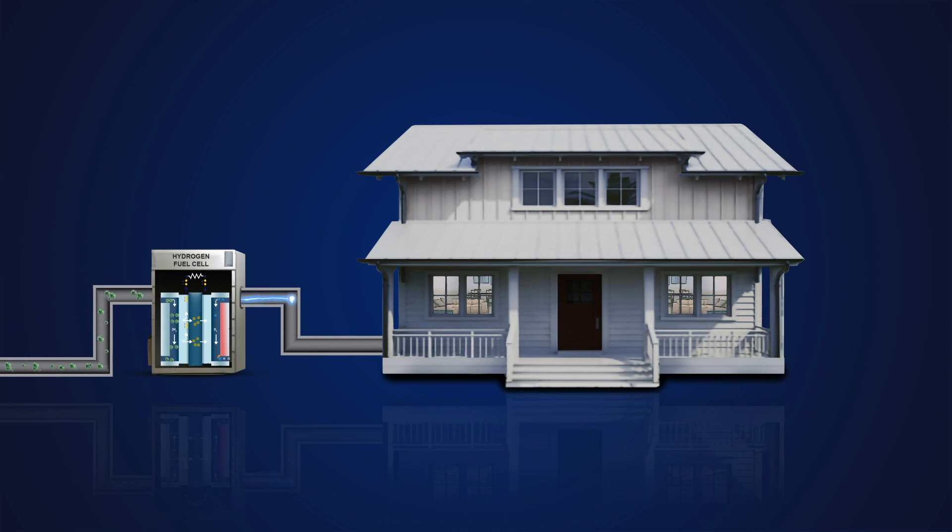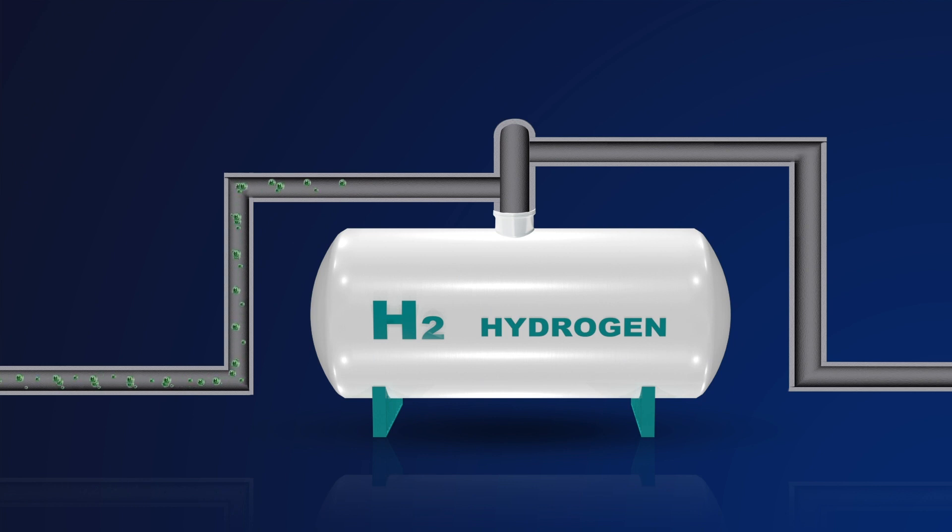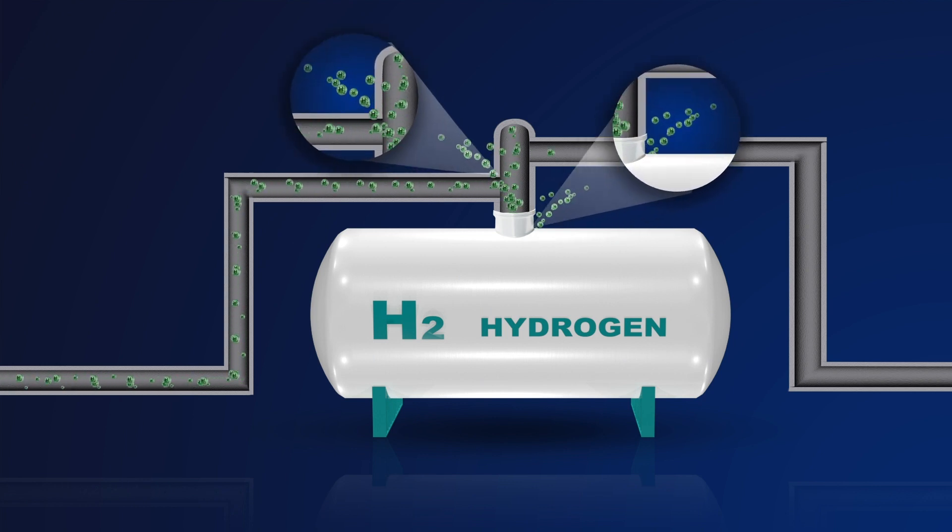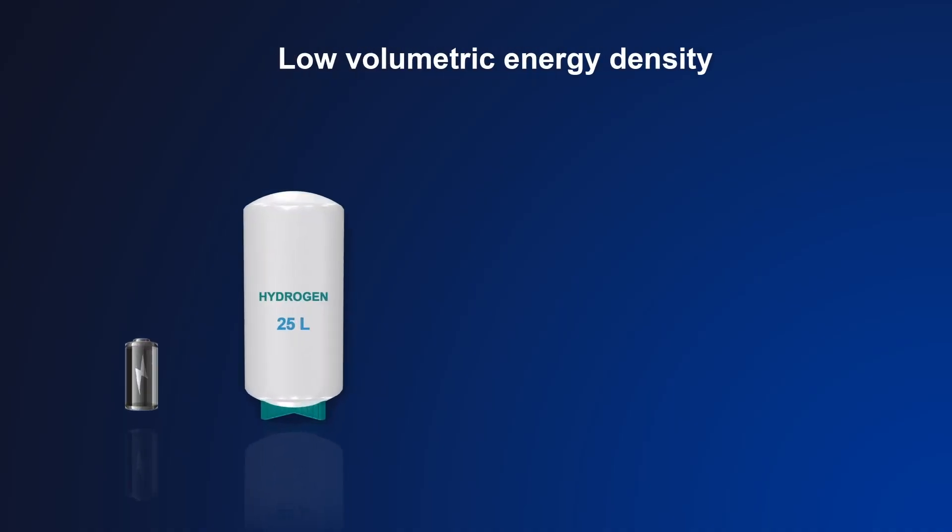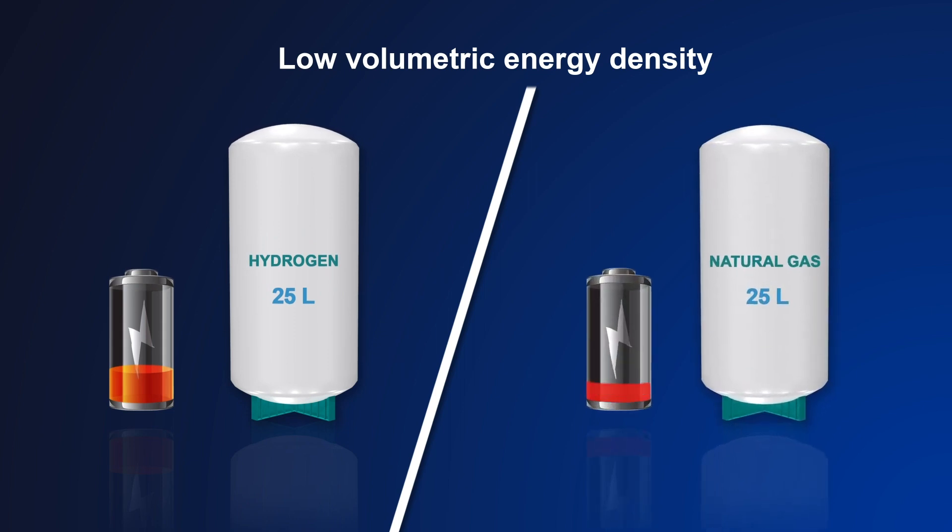But storage is a challenge because hydrogen is so light and small that it can easily escape into the atmosphere, and because it has a low volumetric energy density, which means you need to store more of it to produce the same amount of energy as other fuels.